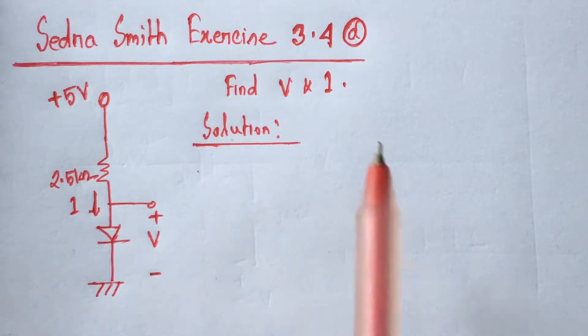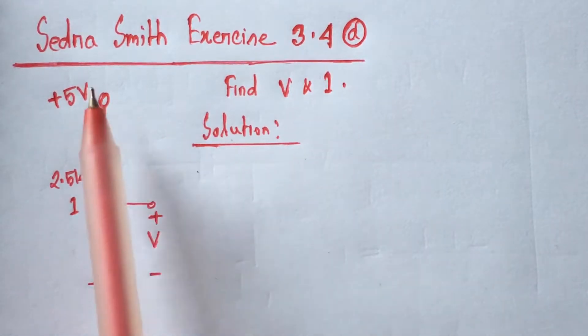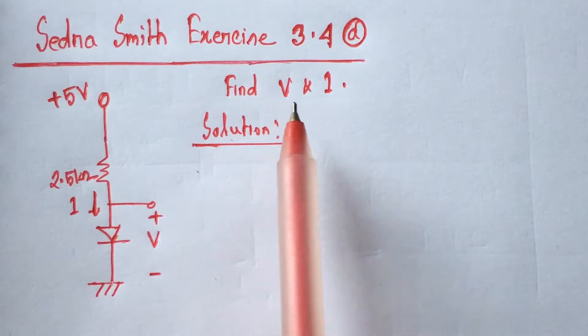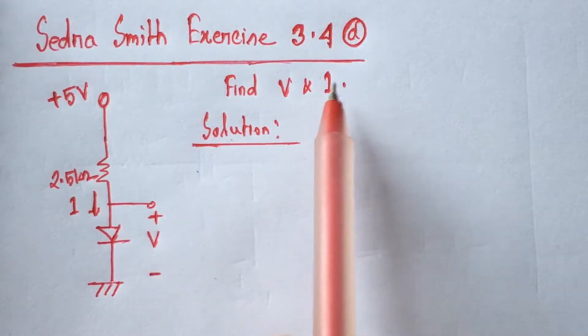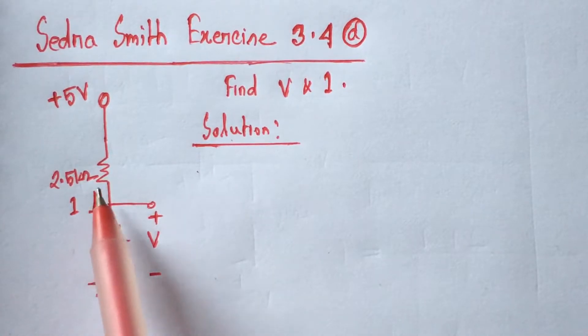Hi viewers, today we will solve exercise 3.4A from Sandra Smith. Here we have to identify the voltage V across the diode and the current I flowing through the circuit.